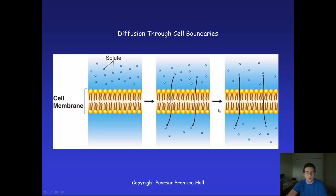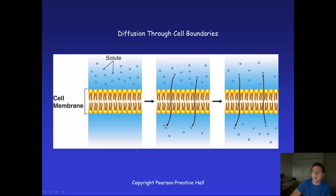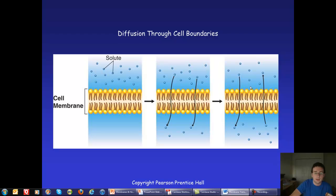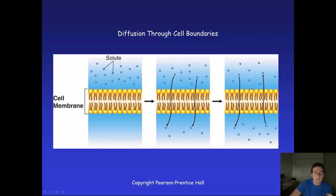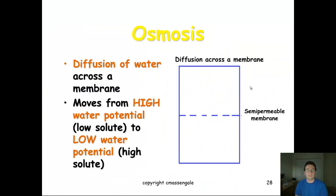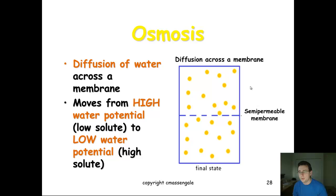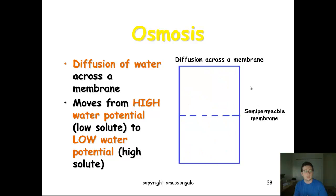Simple diffusion involves molecules which are small enough or nonpolar and are allowed to pass through the membrane — things like fats, carbon dioxide, and oxygen are perfect examples. Now another type of diffusion is facilitated diffusion, but before we get there, let's talk about osmosis.